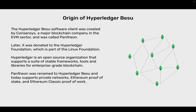The Hyperledger Bezu software client was created by ConsenSys, a major blockchain company in the EVM sector, and was originally called Pantheon. Later, it was donated to the Hyperledger Foundation, which is part of the Linux Foundation. Hyperledger is an open source organization that supports a suite of stable frameworks, tools and libraries for enterprise-grade blockchain. Pantheon was renamed to Hyperledger Bezu and today supports private networks, Ethereum Proof of Stake, and Ethereum Classic Proof of Work.